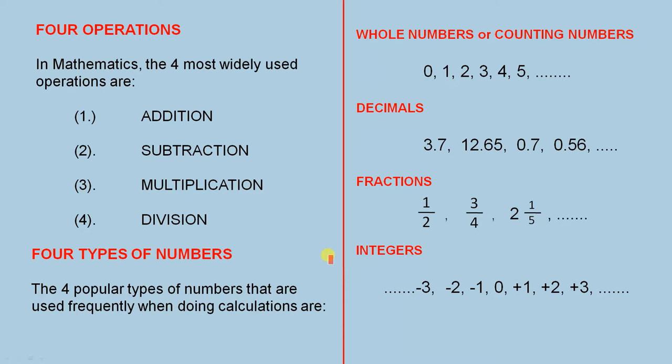Four types of numbers. The four popular types of numbers that are used frequently when doing calculations are the whole numbers or the counting numbers, starting at zero, one, two, three, four, five and they continue.